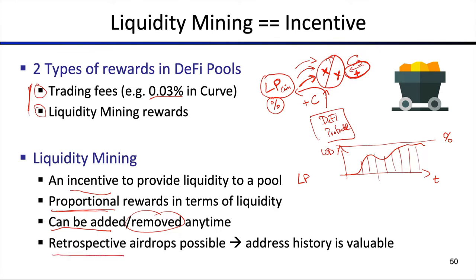What's very interesting is that retrospective airdrops are possible. Uniswap is a famous example — Uniswap did not have a token in the early days of its protocol. Then at some point Uniswap introduced a token and rewarded the previous liquidity providers as well as the liquidity takers — those that actually traded given the liquidity provided. So both liquidity providers and liquidity takers got incentivized to participate in this pool retrospectively.